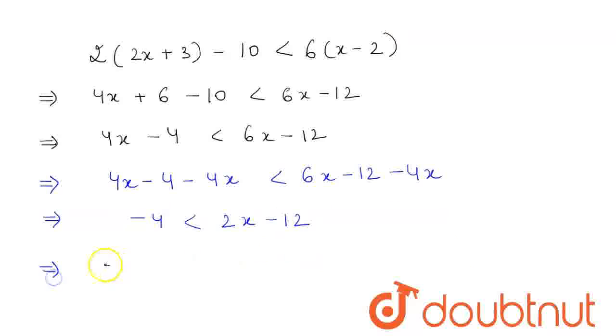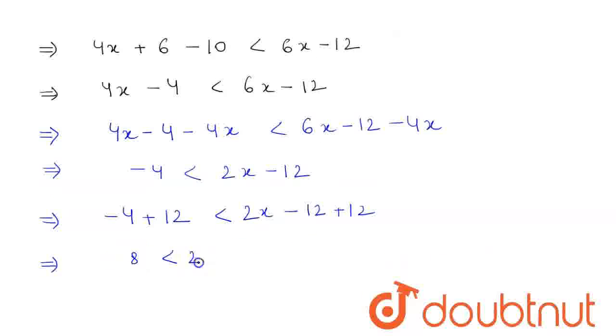Now, if we add 12 to both sides, we get -4 + 12 < 2x - 12 + 12. This gives 8 < 2x.